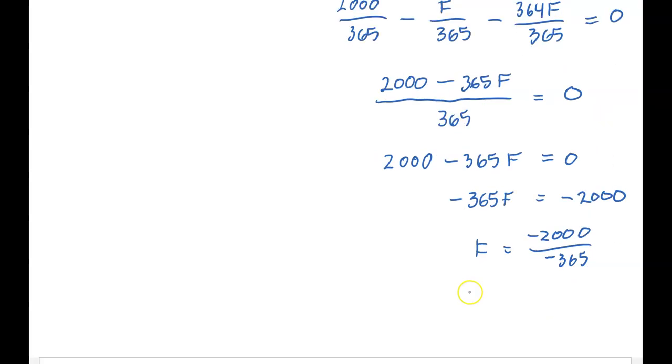If I do negative 2000 divided by negative 365, that's going to be positive 5.47945 approximately.